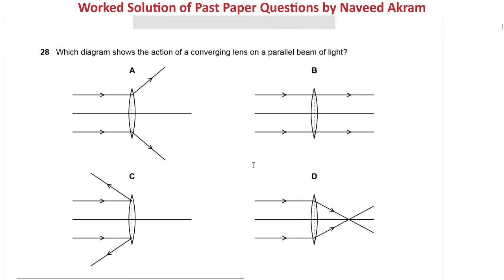The first question is from May/June 2020 paper 1 variant 1 question number 28: which diagram shows the action of a converging lens on a parallel beam of light? A converging lens converges light rays, meaning the distance between rays must be continuously decreasing until they meet at a point. Option A is diverging, option B shows no action, option C shows strange behavior, and option D shows rays converging and meeting at a point — so option D is the right answer.